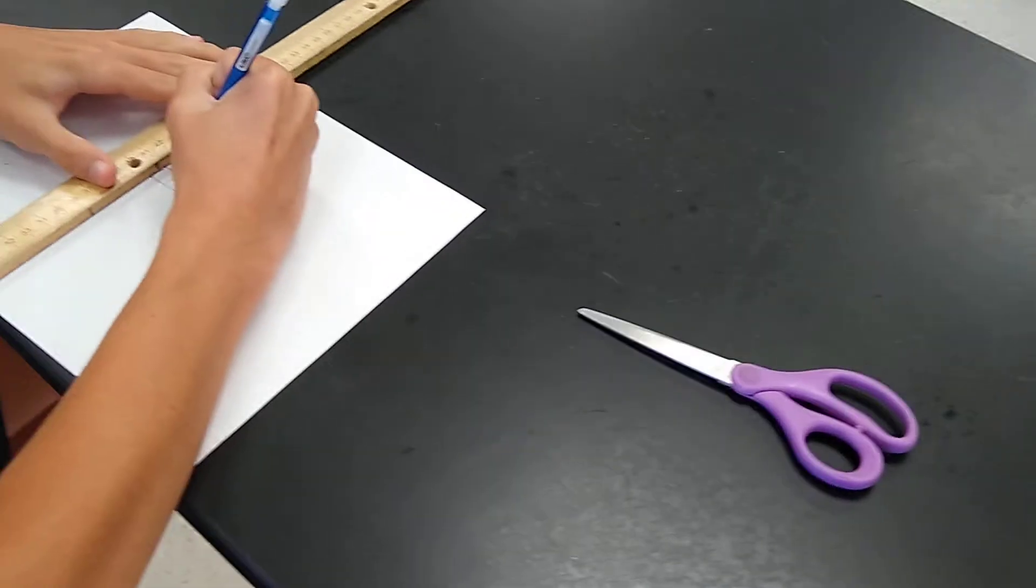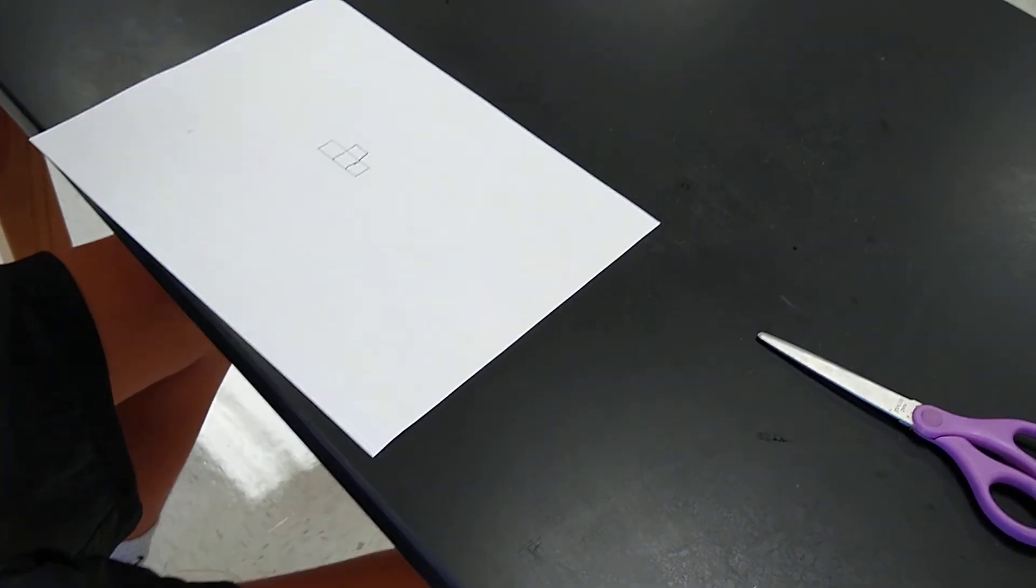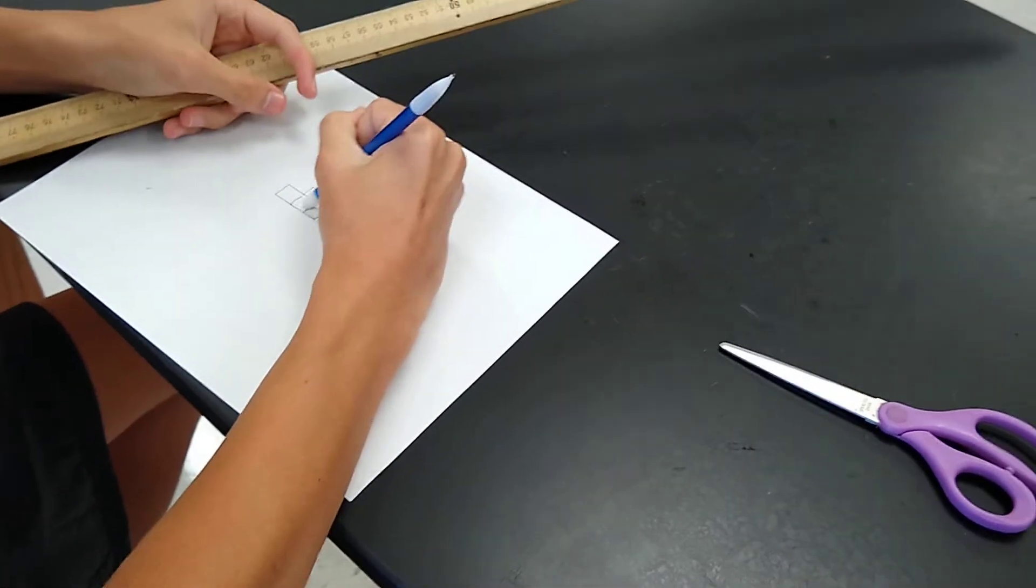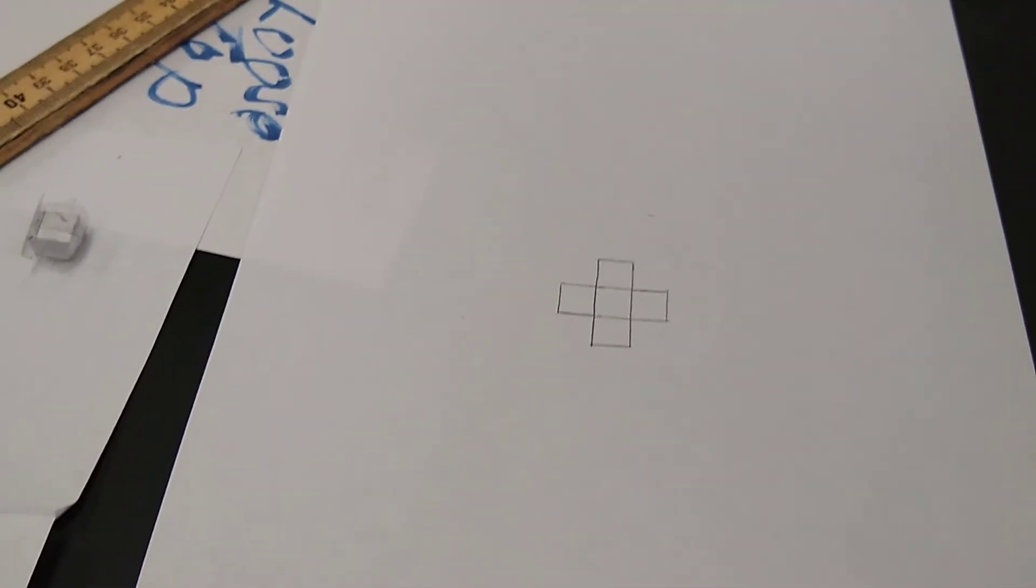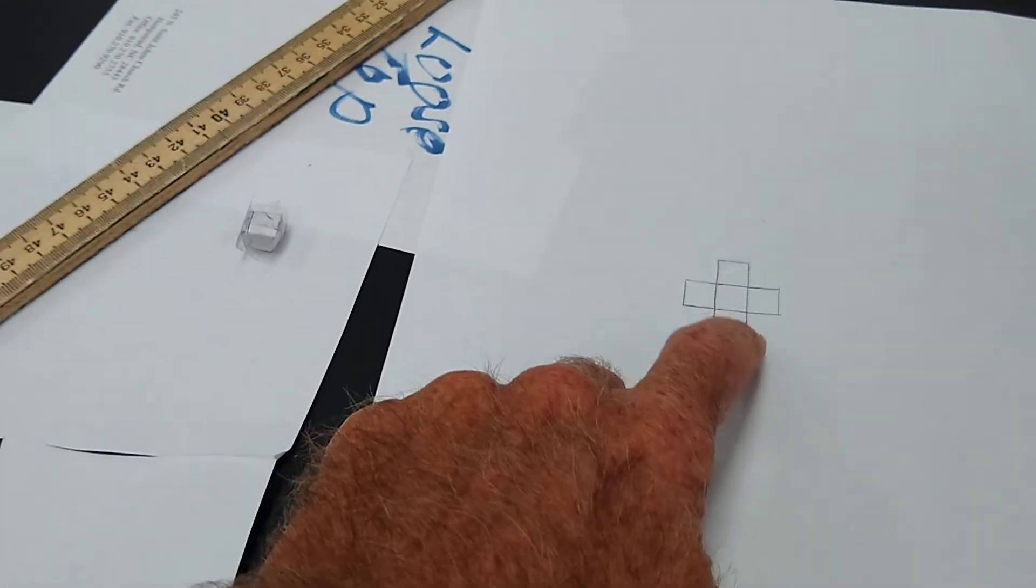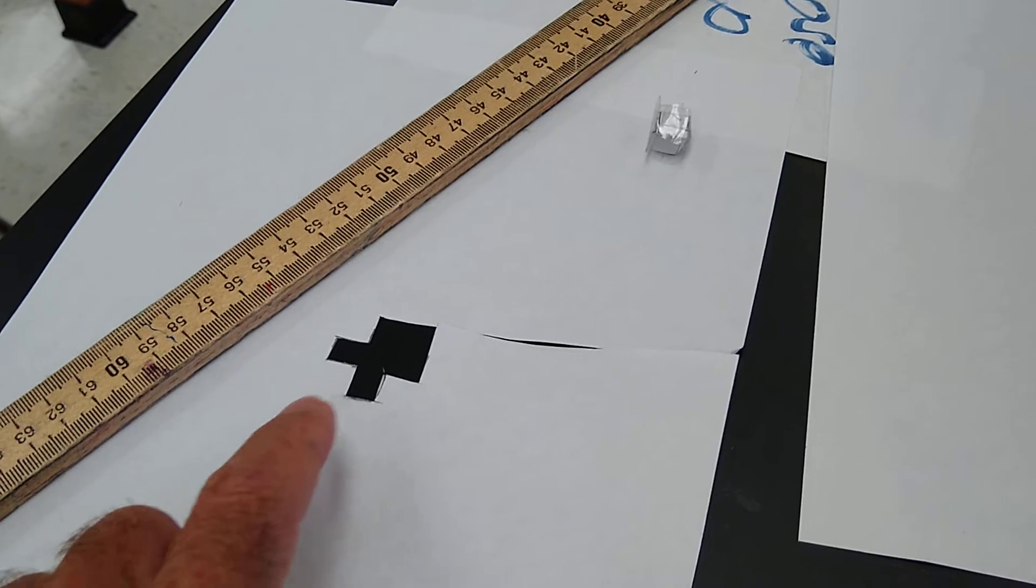So this is sort of the process, making the first little part of it, so it ends up looking like that on the piece of paper. And what we're going to do is we're going to cut these outside lines, just cut there, cut it out. It's going to kind of look like this.